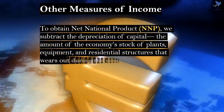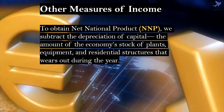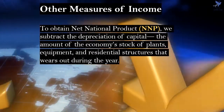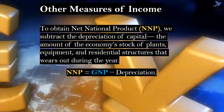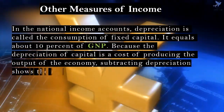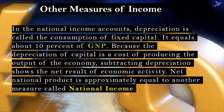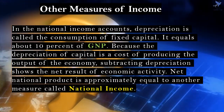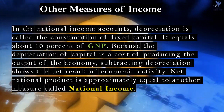To obtain net national product, we subtract depreciation of capital — the amount of the economy's stock of plant, equipment, and residential structures that wears out during the year. Net national product equals GNP minus depreciation. In the national income accounts, depreciation is called the consumption of capital. It equals about 10% of GNP. Because the depreciation of capital is the cost of producing the output of the economy, subtracting depreciation shows the net result of economic activity. Net national product is approximately equal to another measure called national income.